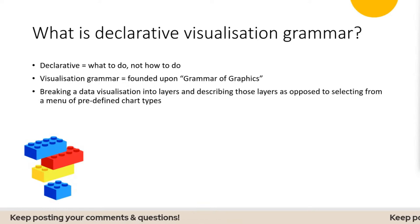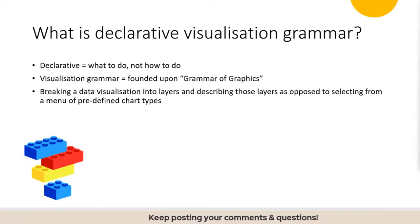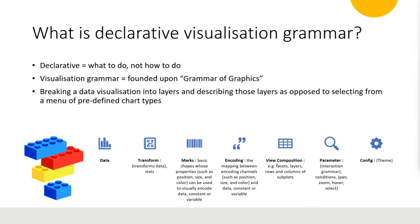What is declarative visualization grammar? This type of language requires a developer to specify what the results of a computation should be rather than how they should be computed. Visualization grammar is founded upon Leland Wilkinson's Grammar of Graphics — a system of breaking a data visualization into layers and describing those layers, as opposed to selecting from a menu of predefined chart types like when we go into Excel and select a line chart, bar chart, or radar chart.